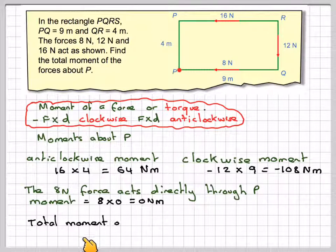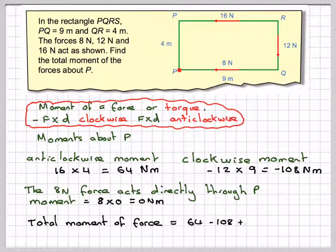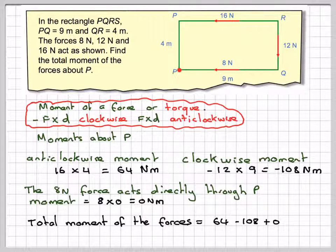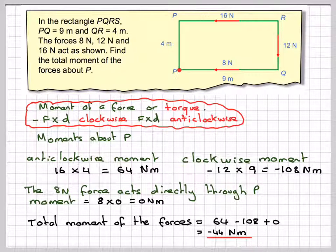So the total moment of forces will be 64 take away 108 plus 0, which is going to give me minus 44 newton meters.